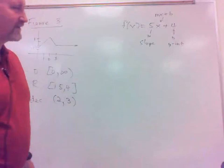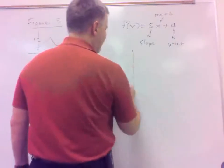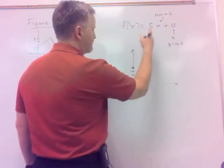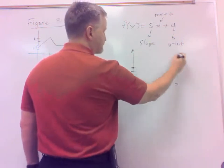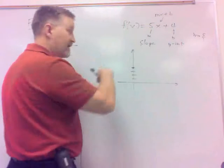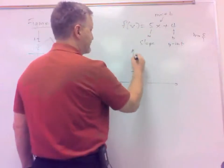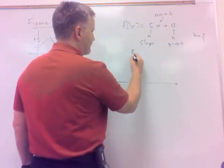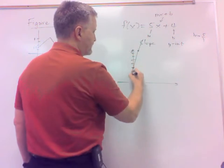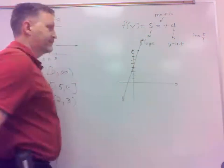I mean, you can graph them on the calculator if you want to, but you should be able to graph these pretty quickly. We've got a slope of 5, so it's going to rise. m equals 5, so it's 5 over 1. Rise 5, run 1. Pretty quick graph. Do those pretty quickly.